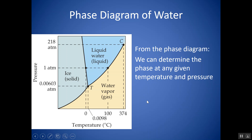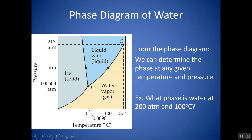Here's a phase diagram for water. You can determine the phase at any given temperature or pressure. For example: what phase is water at 200 atmospheres and 100 degrees Celsius? Pressure is on the y-axis, temperature on the x-axis. Going to 200 ATM and 100 degrees Celsius, I land in the liquid phase. You can do that with any pressure or temperature — find your point and see what phase you're in.